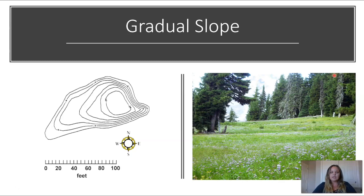Here's another image of what that might look like. If we had a meadow, you would see contour lines very far apart — you're still gaining elevation, but it's over a long distance, so it's a gradual slope instead of a steep slope.